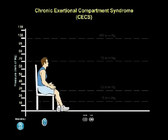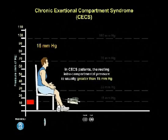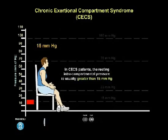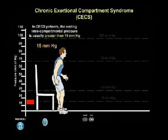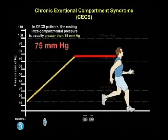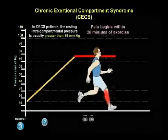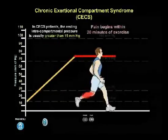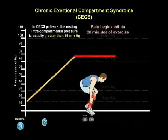Chronic exertional compartment syndrome is an exercise-induced condition different from acute compartment syndrome. In patients with chronic exertional compartment syndrome, the resting intracompartmental pressure is usually greater than 15 millimeters mercury. Pressure rises steeply after initiation of exercise, usually culminating in pain within 20 minutes. Burning, cramping, or aching pain and tightness develop, leading to cessation of activity.